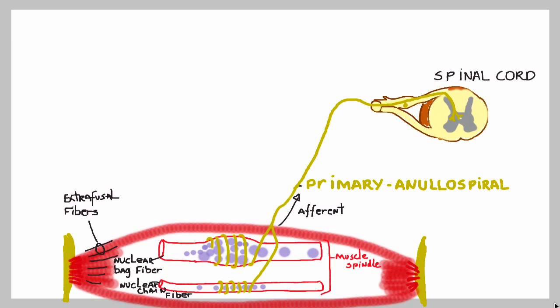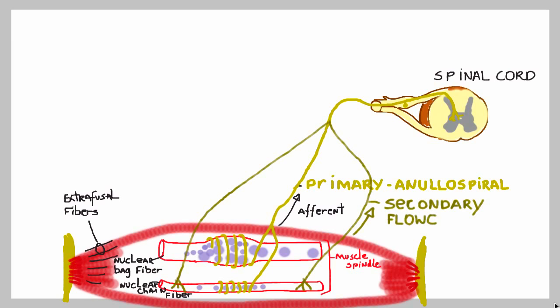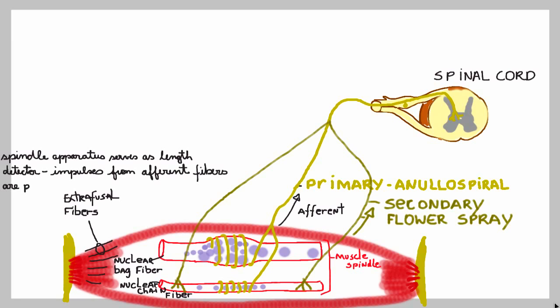There are also secondary sensory neurons associated with these muscle spindles that communicate with the muscle spindle through a flower spray ending. As you stretch this muscle, the stretch causes these sensory neurons to fire information that ascends all the way to the spinal cord. The spindle apparatus serves as a length detector — impulses from these afferent fibers are proportional to the length of the muscle, meaning the more stretch the muscle experiences, the faster the firing rate of these primary and secondary sensory neurons.